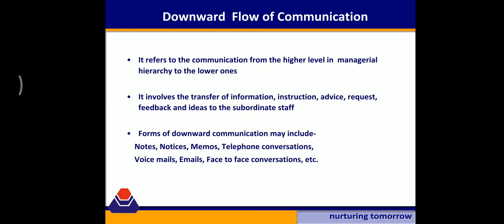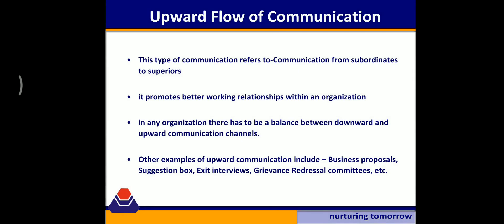The first is downward flow of communication, which refers to any communication that moves from a higher level in the hierarchy to the lower level. For example, in an organization, the CEO communicates directly to branch managers or assistant managers — giving instructions, advice, orders, or feedback. This kind of communication can occur via telephone conversations, emails, face-to-face conversations, or even notices.